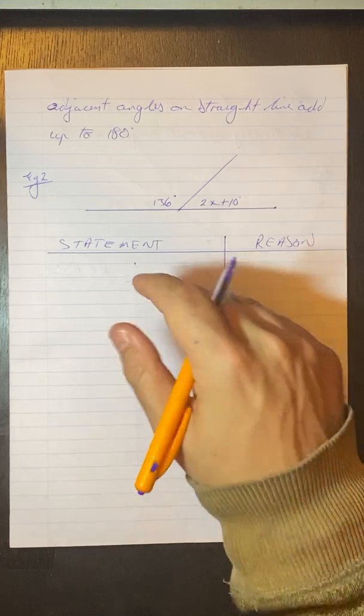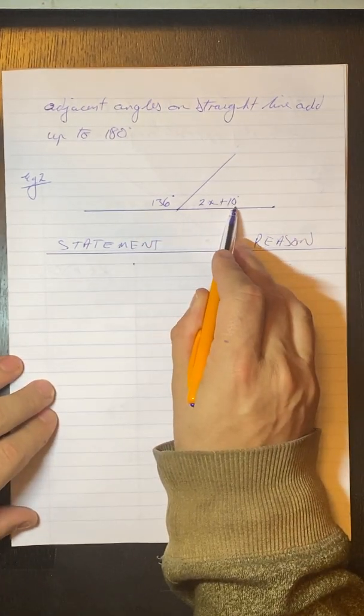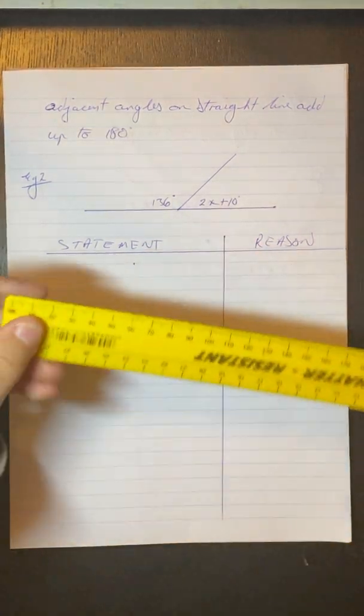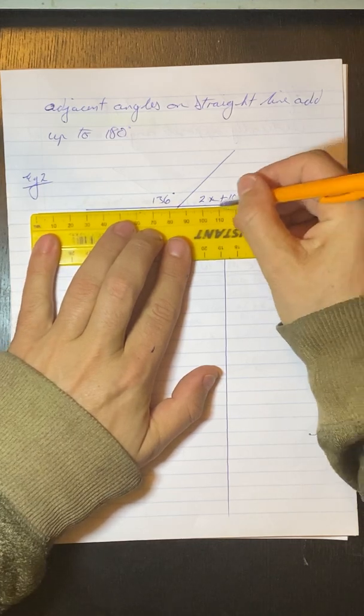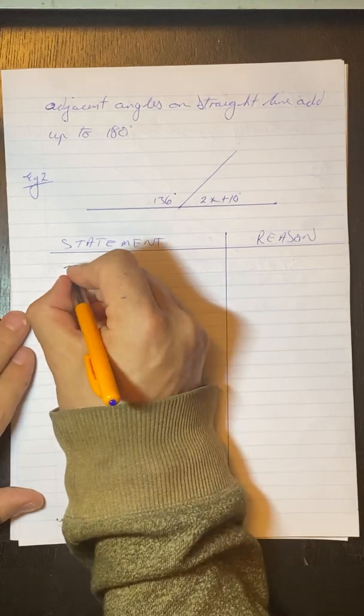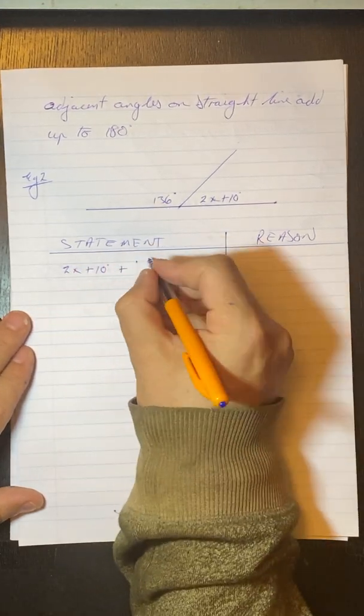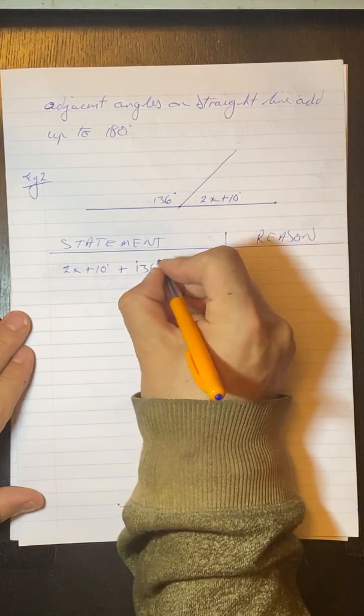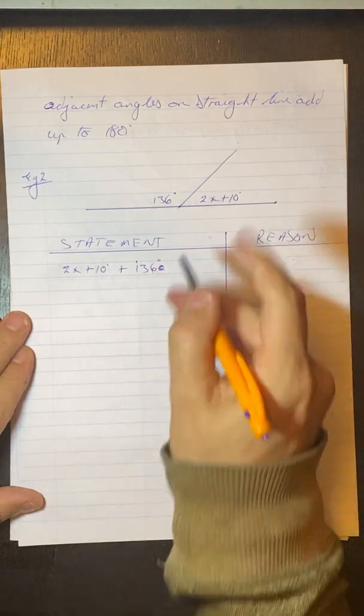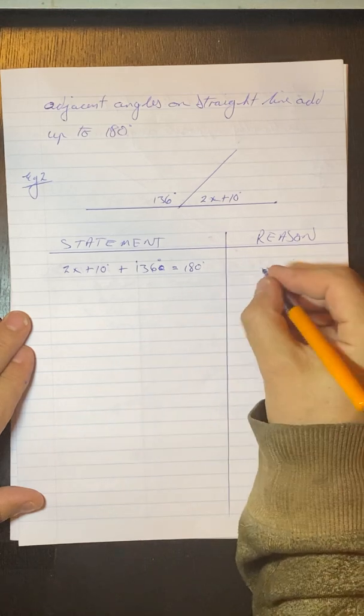So how do I set this up with my statement reason? So I know that 2x plus 10 plus 136 must be equal to 180 degrees because you can see they're on this straight line. And angles on the straight line are 180 degrees. So we know that 2x plus 10 degrees plus 136 degrees, so I've just taken my two angles, added them together, and that will be equal to 180 degrees.